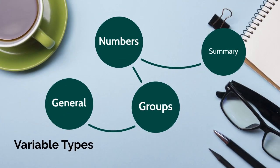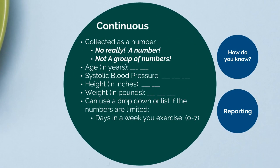So what about numeric variables? Often called continuous variables, they are collected as a number — not a group of numbers, not '12 or higher,' '3 or more,' '2 or fewer.' Those are categorical. With a continuous or numeric variable, you are simply capturing the value of that variable: age in years, systolic blood pressure, height in inches, weight in pounds. You can use a drop-down or a list and have people select the number if you have a limited list of numbers.